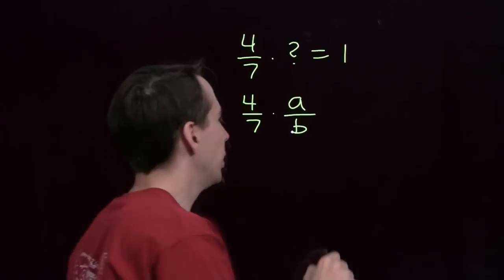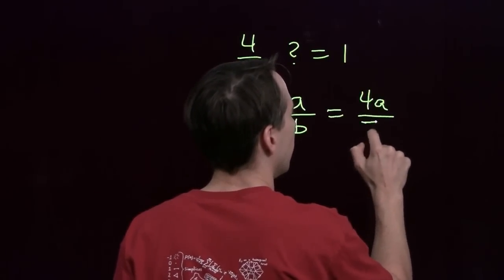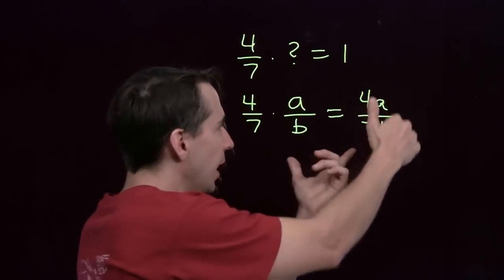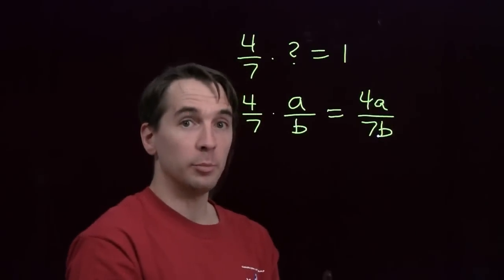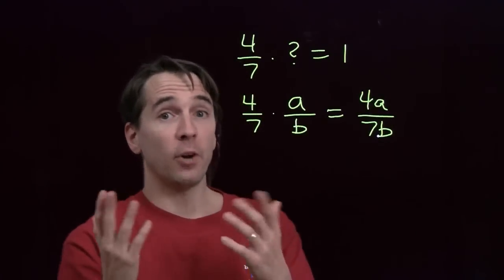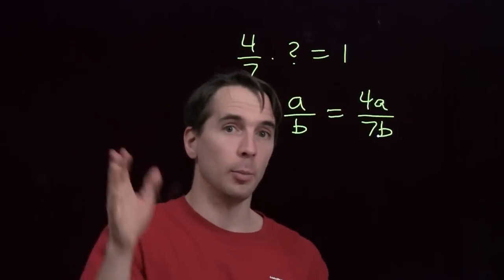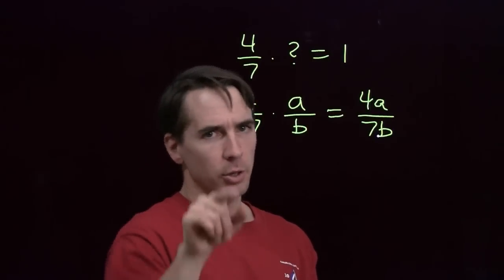And I know how to multiply two fractions. I multiply their numerators, 4a, and 7b on the bottom. I'm looking for a/b here. I'm looking for a and b such that this product equals 1. I want this fraction over here, 4a/7b, to equal 1. Now, a fraction equals 1 if its numerator and denominator are the same, because if you take a number, divide that number by itself, you get 1, unless the number is 0.